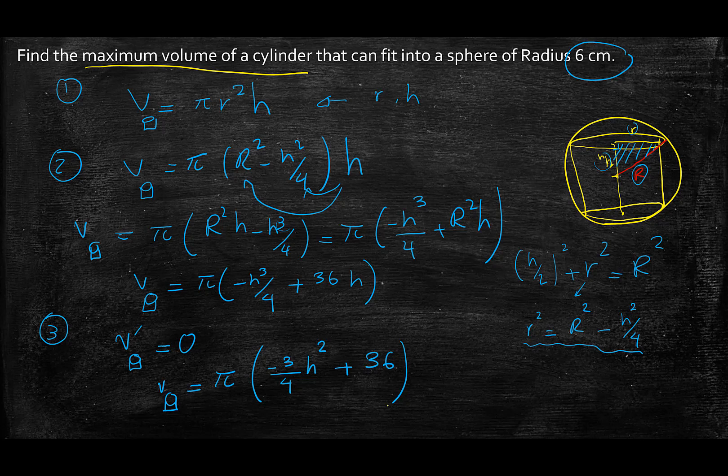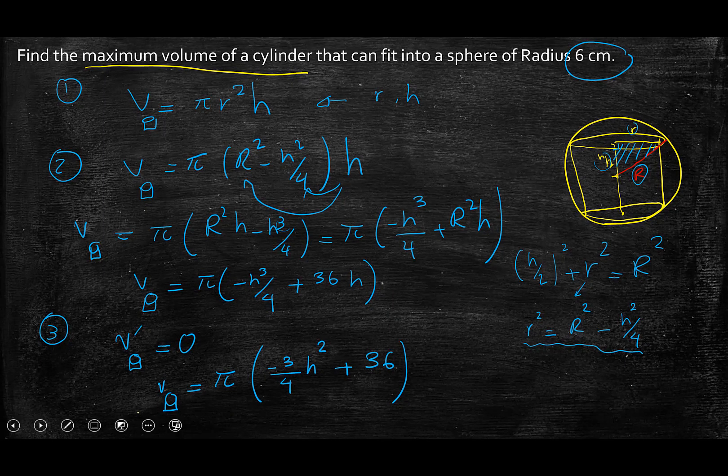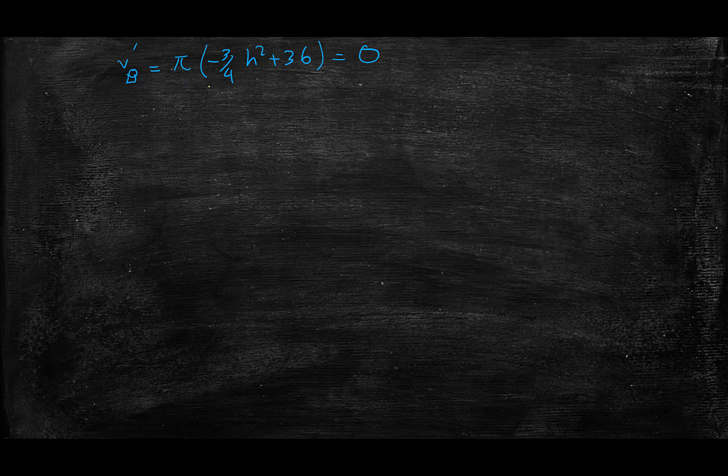Now in order to solve this, I need to put the derivative equation π(-3/4h² + 36) equal to 0 and solve for h. Since π is a number, what's inside the bracket needs to equal 0, so -3/4h² + 36 = 0. I move 36 to the other side, so -3/4h² = -36.